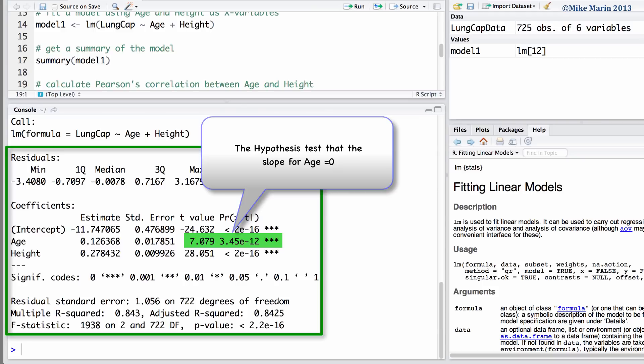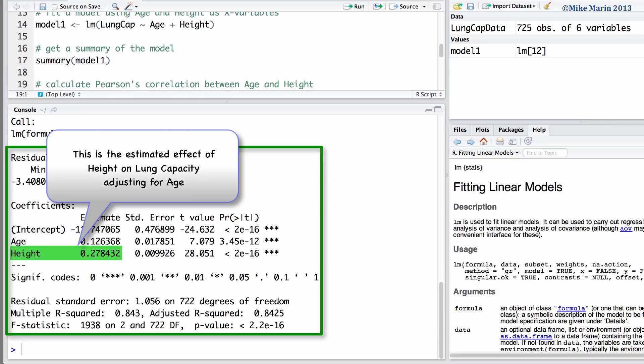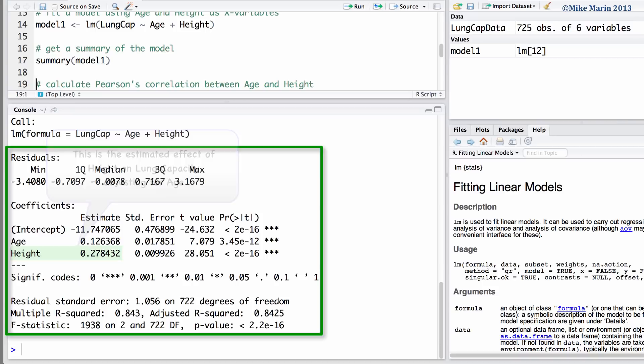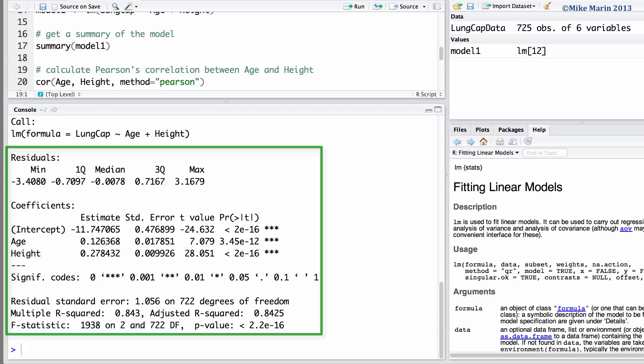We can also see the hypothesis test that the slope equals 0 here. The slope for height is 0.278. This is the estimated effect of height on lung capacity, adjusting for age. We can see the test for the hypothesis that the slope for height is 0 here.